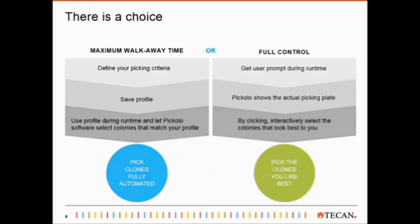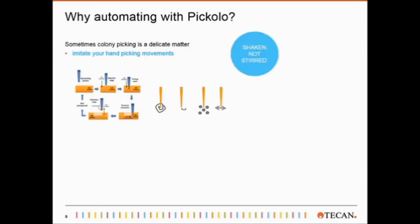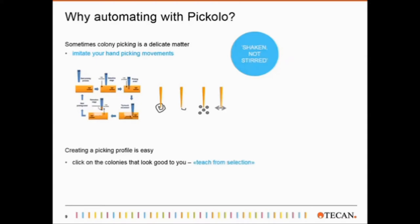But why automating with Piccolo? Sometimes picking is a delicate matter, and it is not sufficient to simply stab the colonies. The beauty of using colony picking on a liquid handler is that the full liquid handler software can be used to define the picking process, and it is possible to really imitate hand movement. Like shown here, a scratch movement where the tip detects the agar surface, goes 1 mm into the agar, scrapes sideways while aspirating, and then moves back out again. But also little sideways movements or something like a multi-stabbing is easily possible to get as much material as possible. And the Teach from Selection function makes it easier to create picking profiles by just clicking on the colonies that look best.